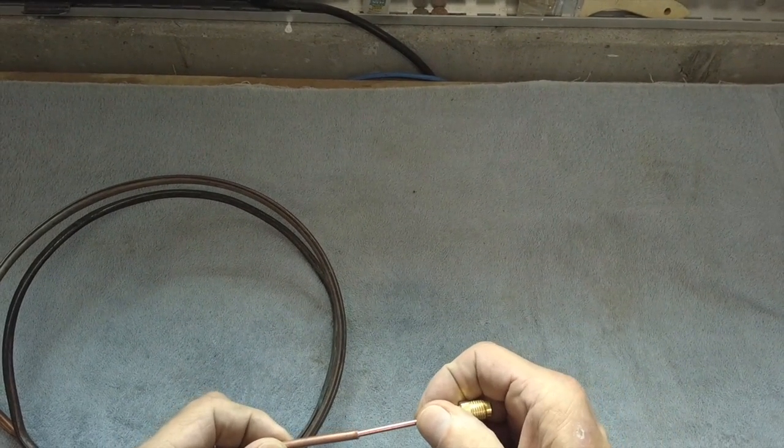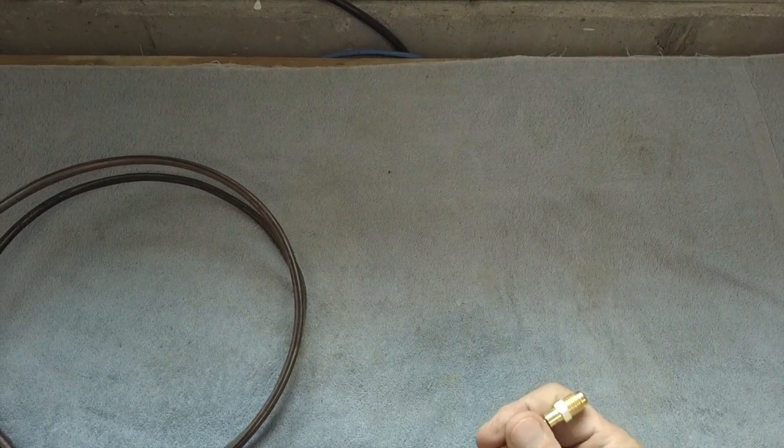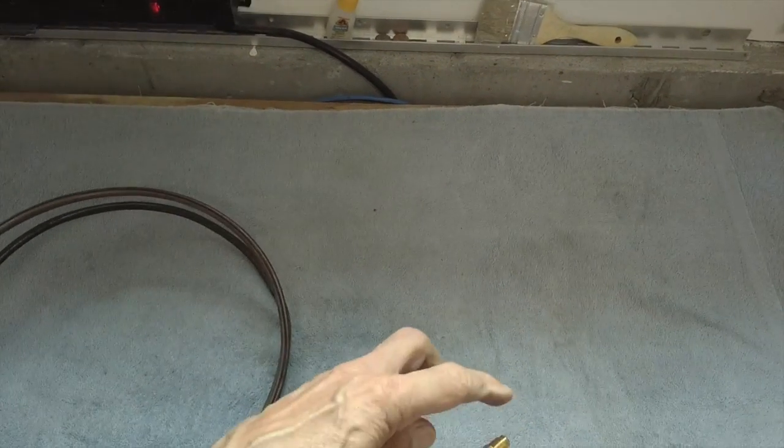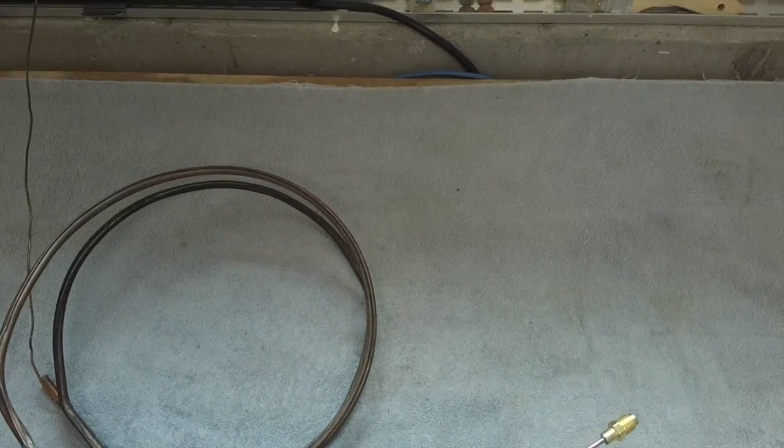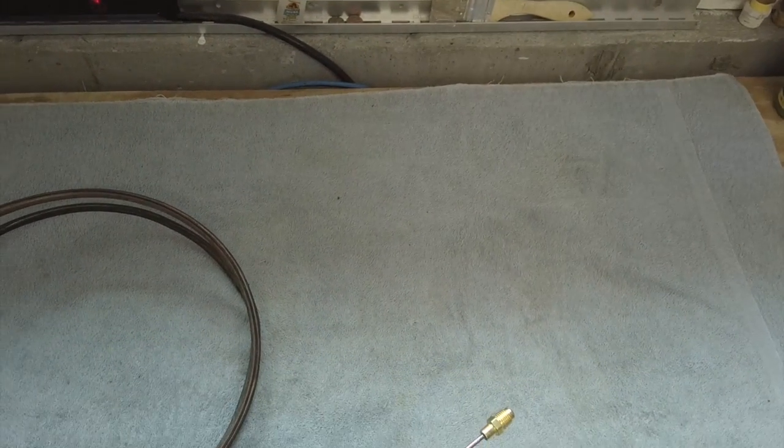We're going to solder this, sweat it together, and then we're going to sweat it onto here, into the cap tube. Then we're going to pull a deep vacuum on this tubing while we heat it to see if we can clear it up.